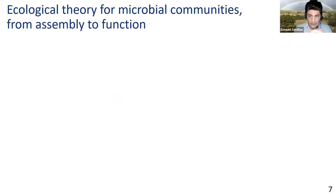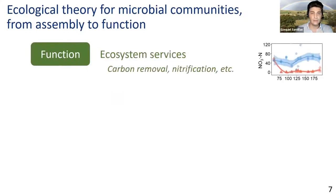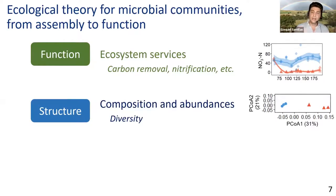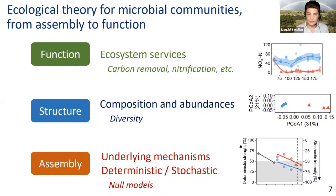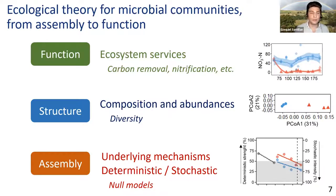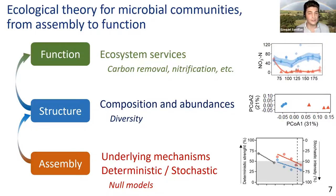When studying microbial communities in ecology, we focus on three components: overall function — the ecosystem services provided; community structure — how many members exist and in what relative abundances, typically addressed via diversity metrics; and assembly mechanisms, which can be deterministic when the environment selects predictably, or stochastic where random events of births, deaths, or priority effects shape the community. The theory of community ecology suggests that community assembly shapes community structure, which in turn influences the community function we want to control.